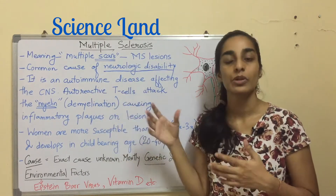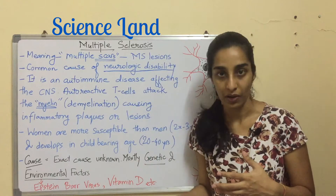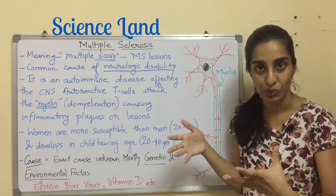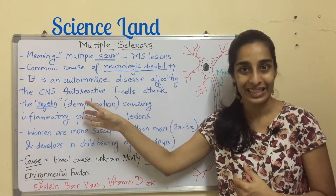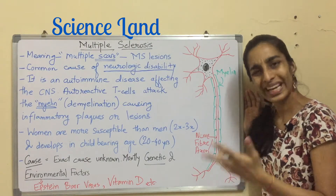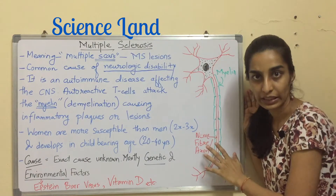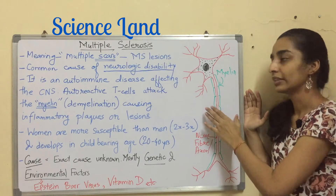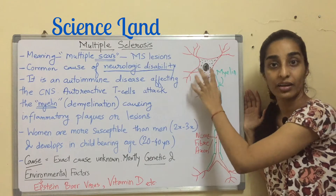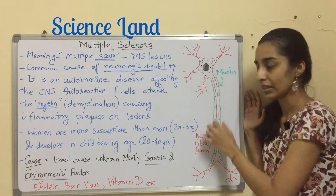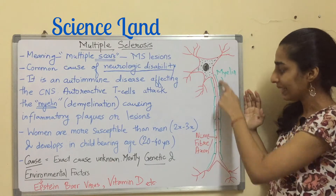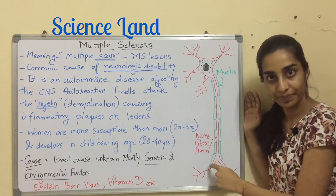Basically, it is an autoimmune disorder — an autoimmune disease affecting the CNS, the central nervous system, which comprises the brain and the spinal cord. Autoreactive T cells of the body, which are the immune cells, attack the myelin. This is a nerve cell, or nerve fiber, or axon — basically a neuron. This neuron has a body, where the nucleus is present, and a fiber through which impulses pass.